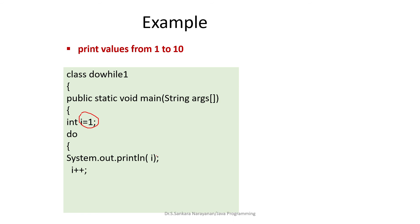Then I have the increment statement i++, so i is incremented to 2. Now we check the condition: while i is less than or equal to 10. The value of i is 2, so 2 <= 10 is true, and the body of the loop executes again. i is then incremented to 3, and 3 <= 10 is still true. This repeats until i reaches 11, at which point the condition is false and it exits the do-while loop.